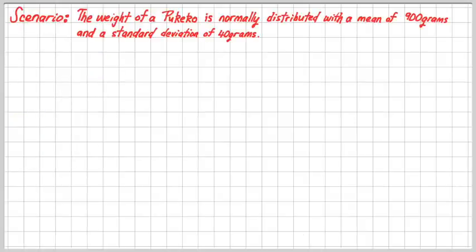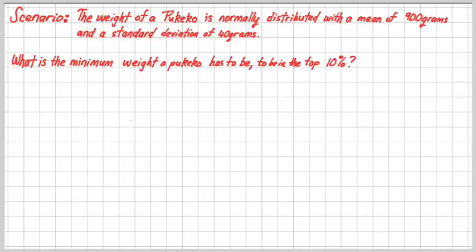Here is the scenario. The weight of a Pukeko is normally distributed with a mean of 900 grams and a standard deviation of 40 grams. The first question we are going to ask is, what is the minimum weight a Pukeko has to be to be in the top 10%?